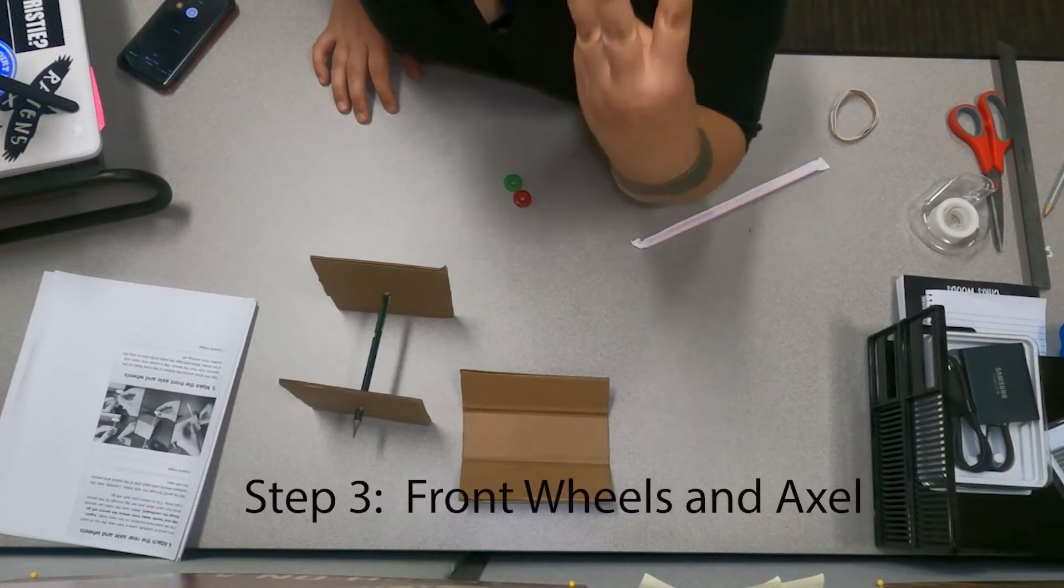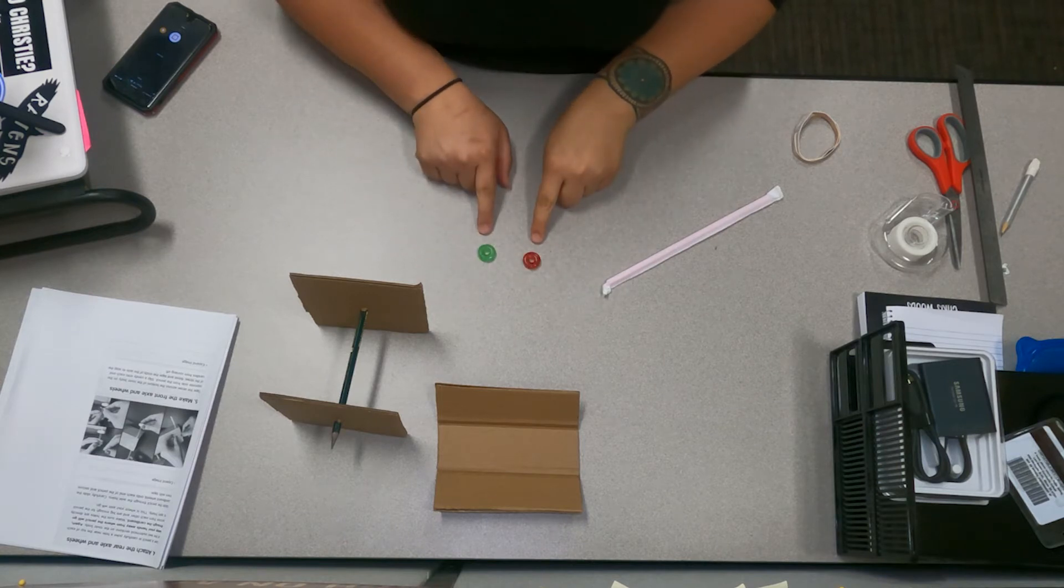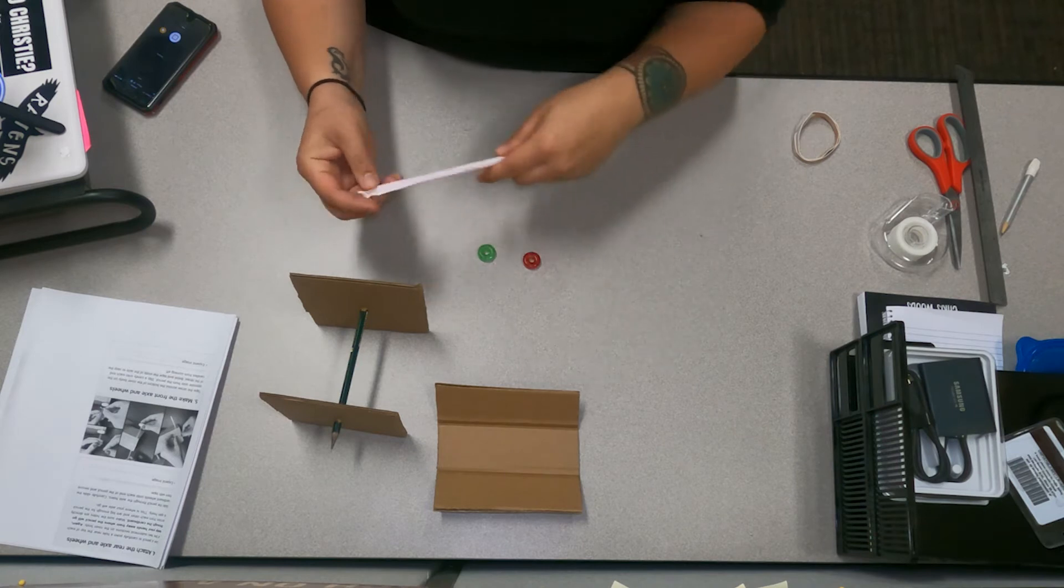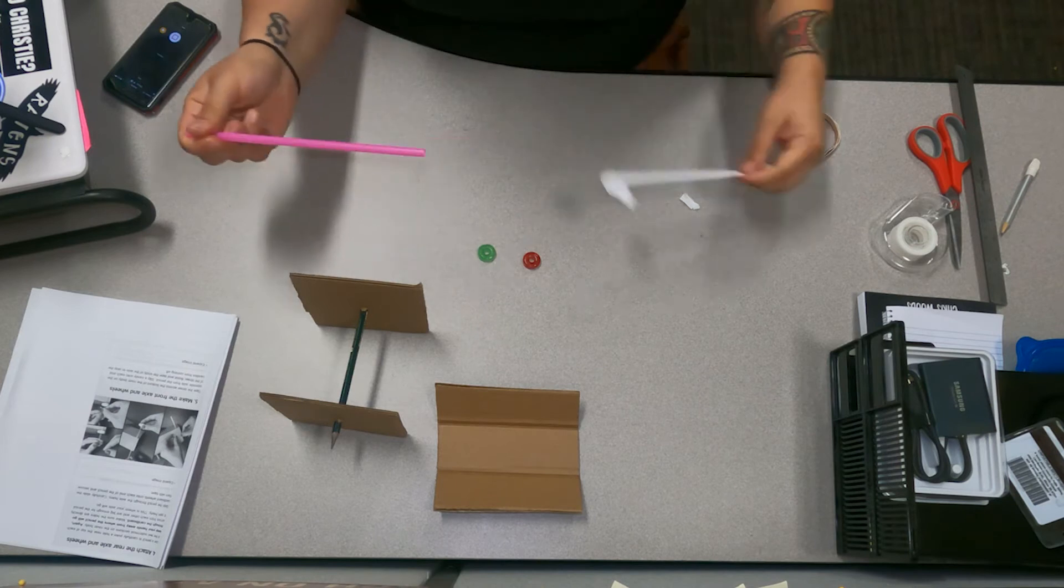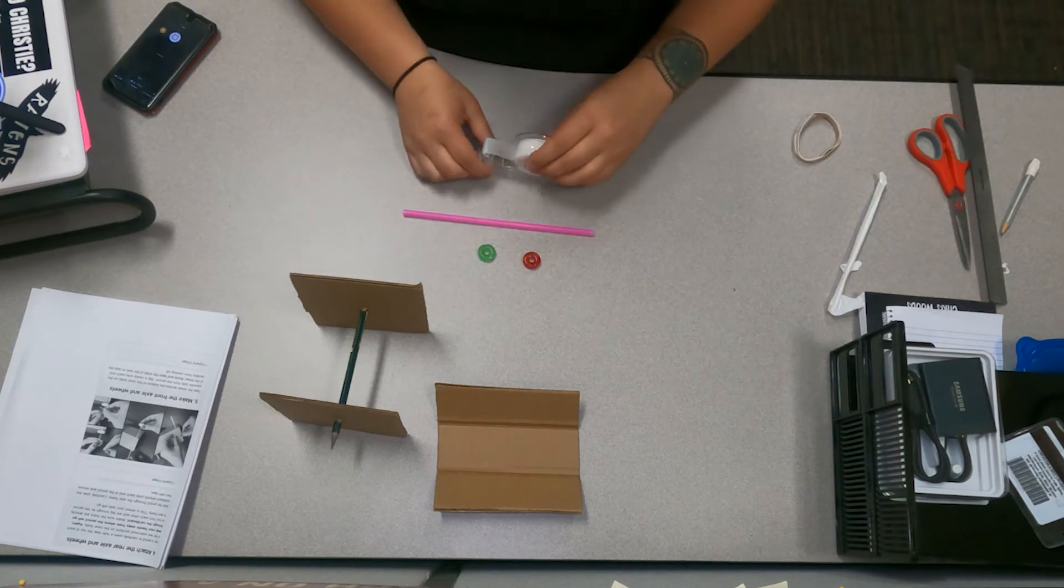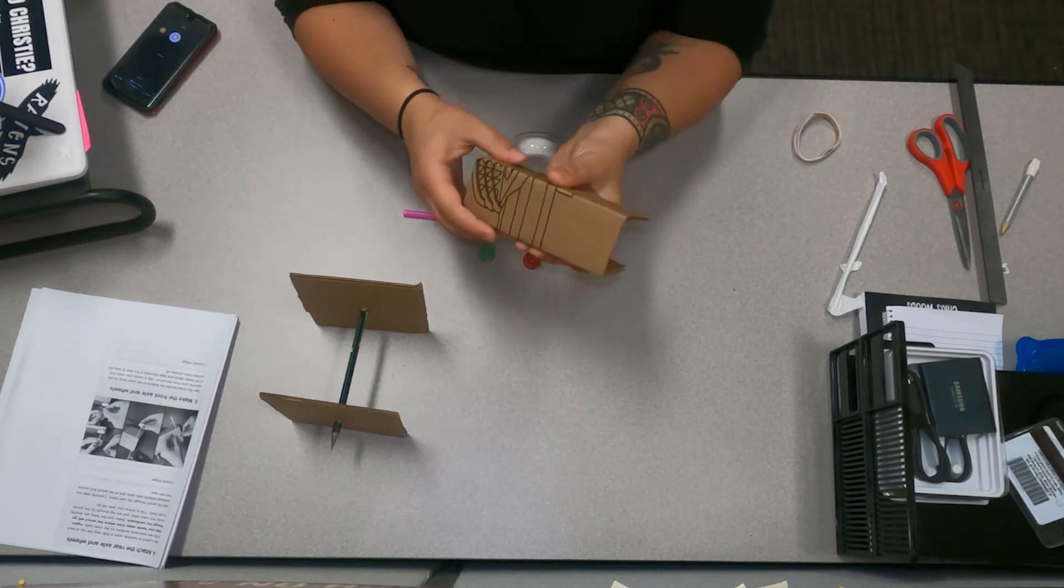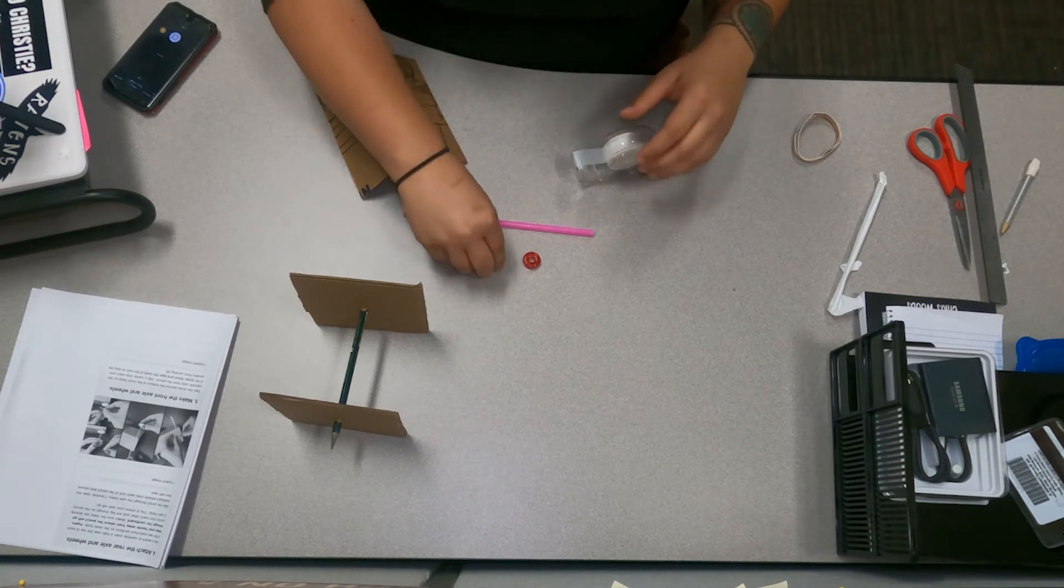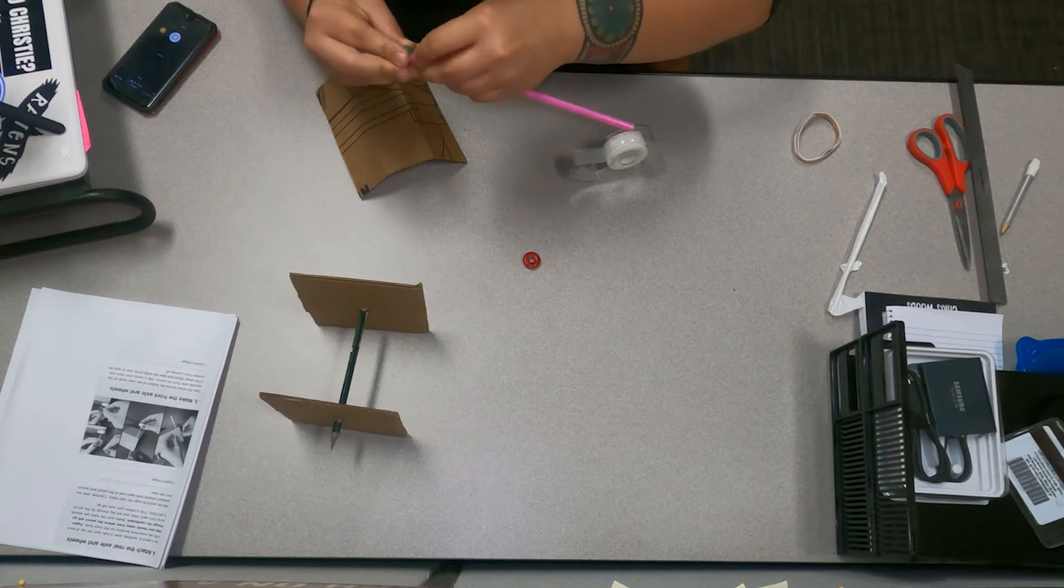Step three, we're going to make the front axle. We're going to need the two lifesavers, the straw, and the tape as well. For this we're going to flip over your cardboard rover body and we're going to put the piece of candy on one side.